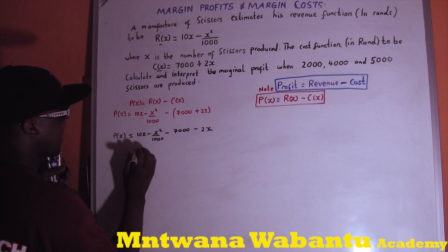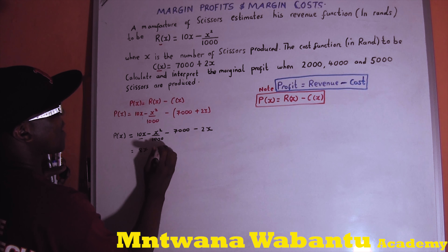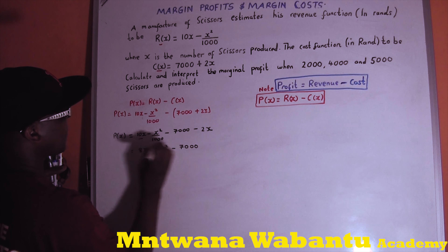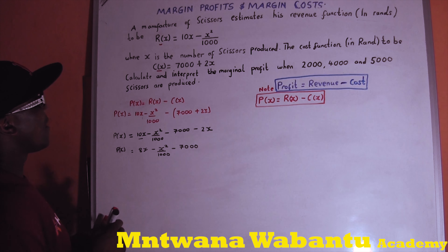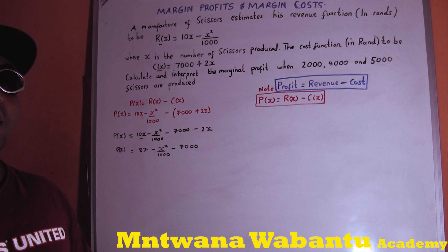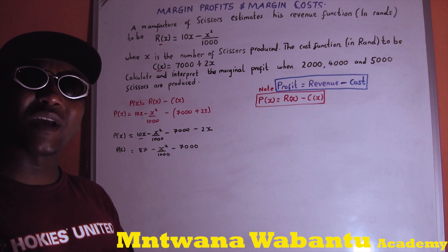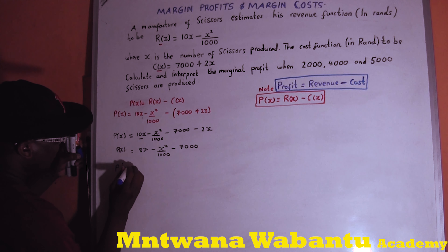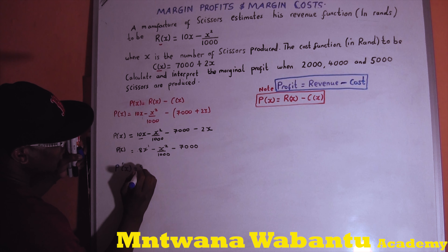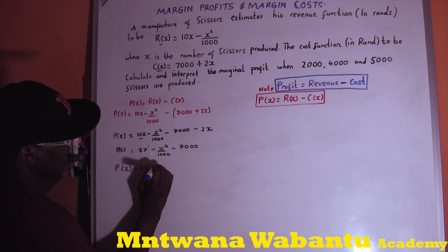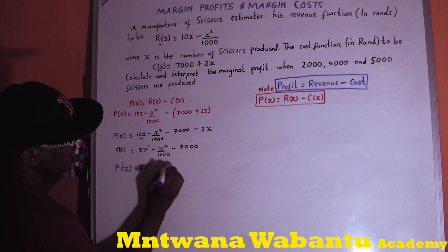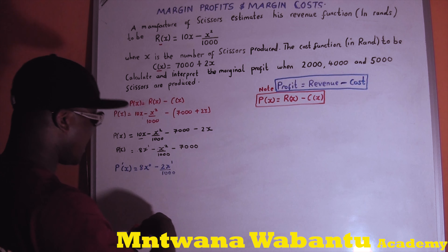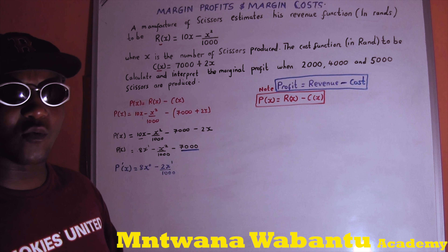This is the profit function. But remember, if you want the marginal profit you have to differentiate it — this is just the profit function. So for marginal profit we must find the derivative. The derivative: for 10x, the power is 1, so 1 times 10 equals 10, and x to the power 1 minus 1 equals x to the 0.